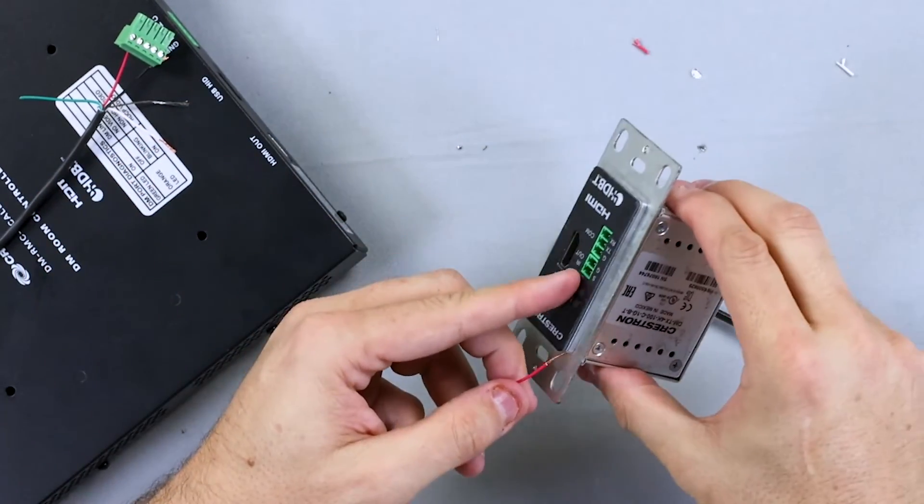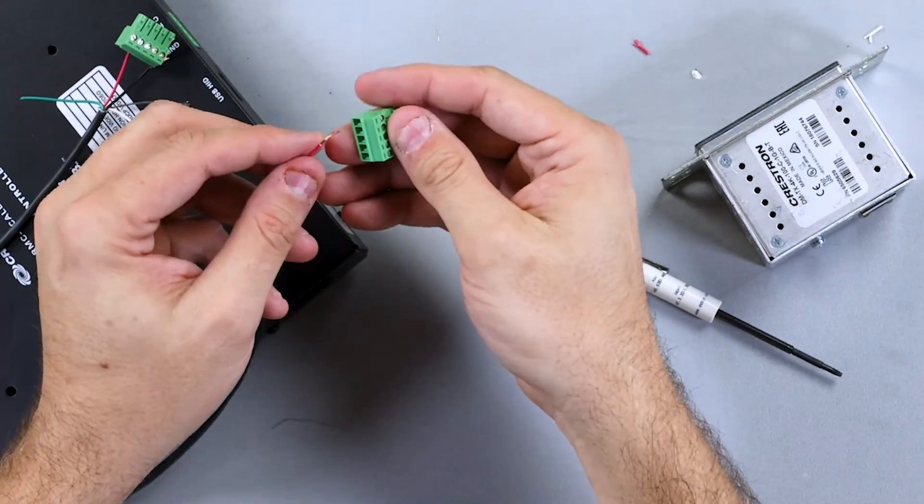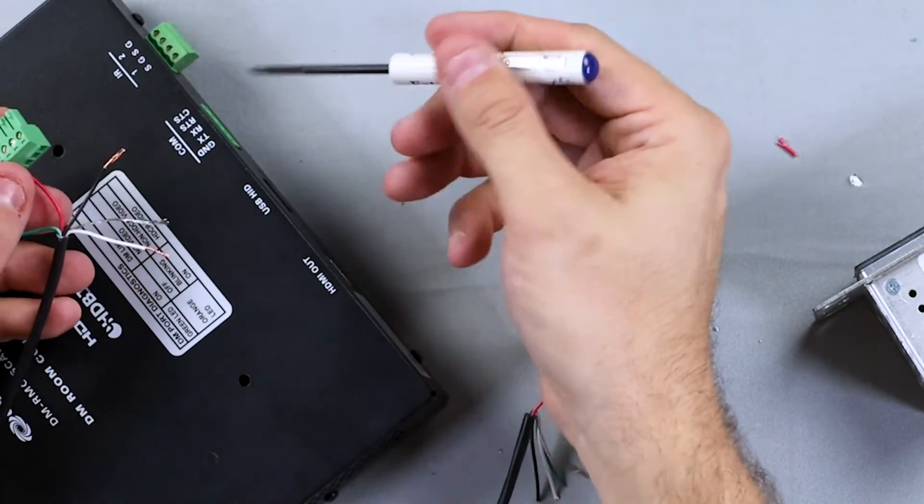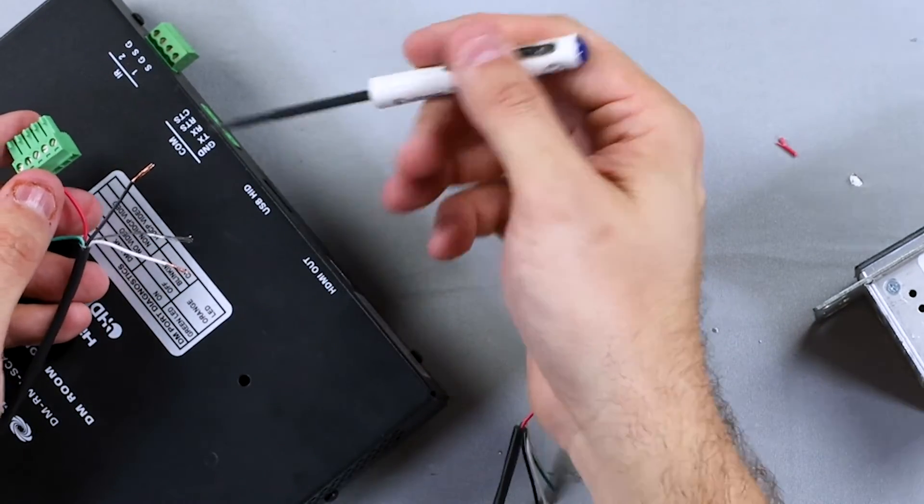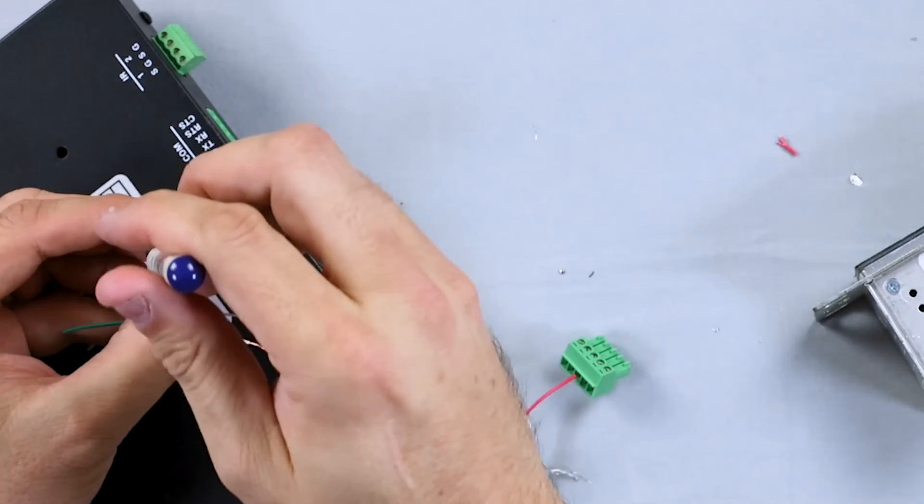So on this side, our receive is going to be our third one instead of the second one. Since we're doing it, our receive on this side will be our black, which is going in number three. Tighten that down.